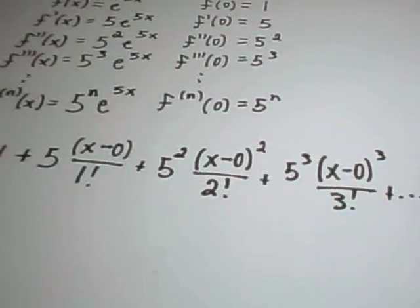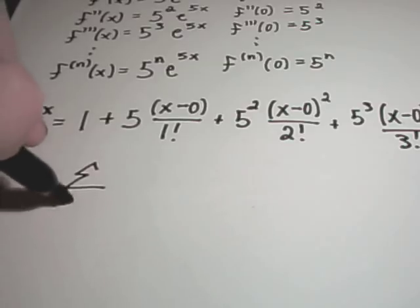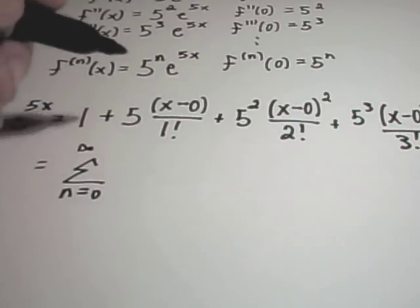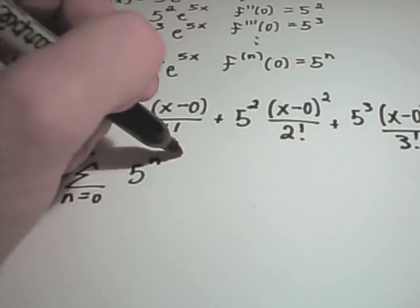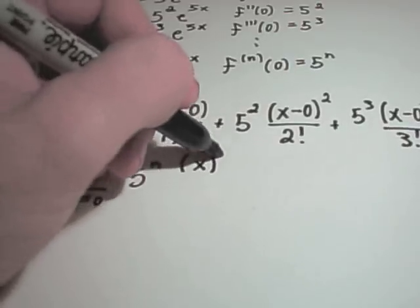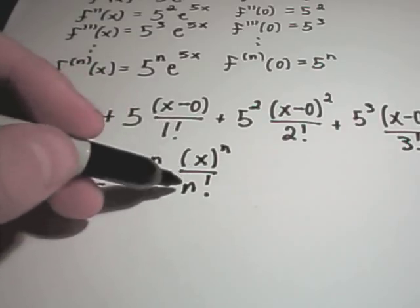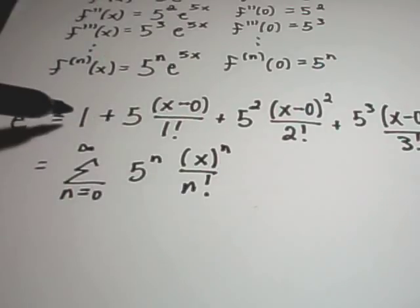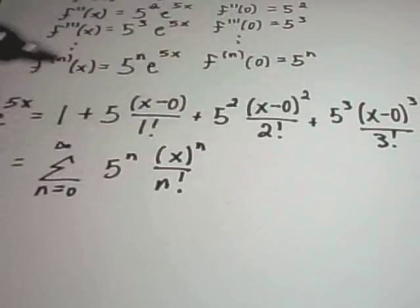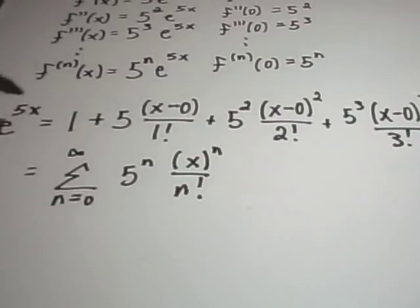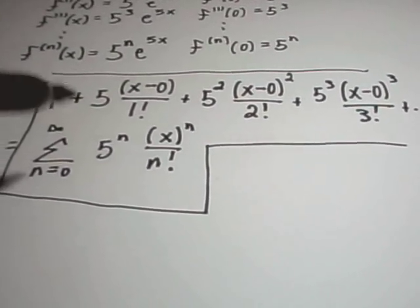We can rewrite this more compactly as the sum from n equals 0 to infinity of 5 to the n times x to the n over n factorial. Notice if you plug in n equals 0 you get 5^0 times x^0 over 0 factorial — which is defined as 1 — giving 1. Plugging in n equals 1, 2, 3 gives each successive term. This is the Maclaurin series expansion for e^(5x).